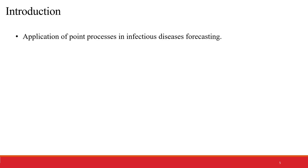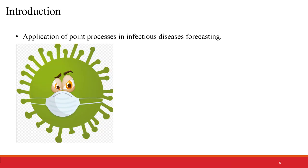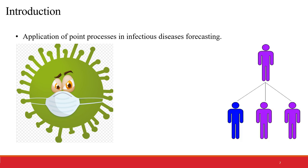Now let's talk about application of point process in infectious disease forecasting. Infectious diseases are transmitted due to direct contact between an infectious person and a susceptible person. The number of persons infected by a single individual can be characterized as a counting process.